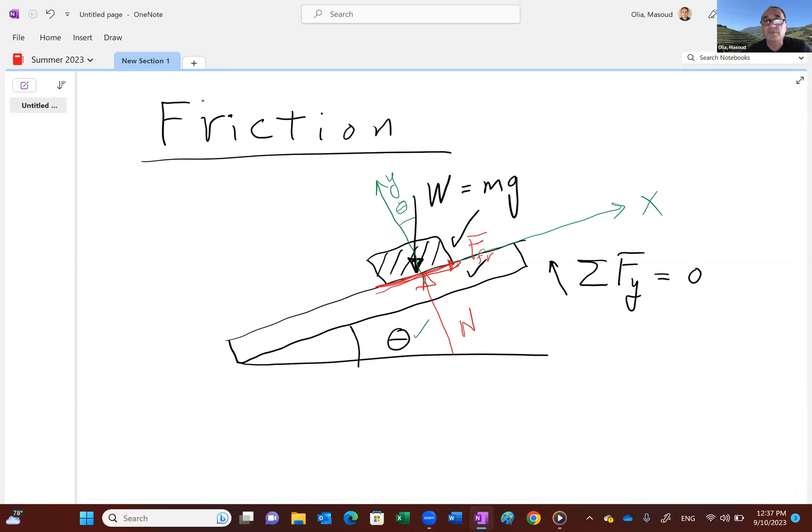Remember, y is 90 degrees to the surface as shown here. So we have n, and then we have the component of this guy along the y-axis, which happens to be w cosine theta. That would be minus w cosine theta because it's pointing down. So n becomes w cosine theta. Let's hold on to this.